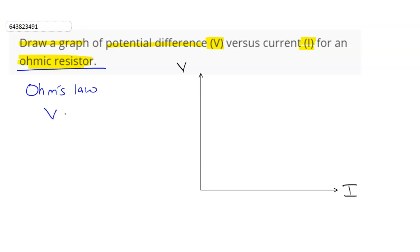That is, V is directly proportional to I. This means that the relationship between V and I is linear.